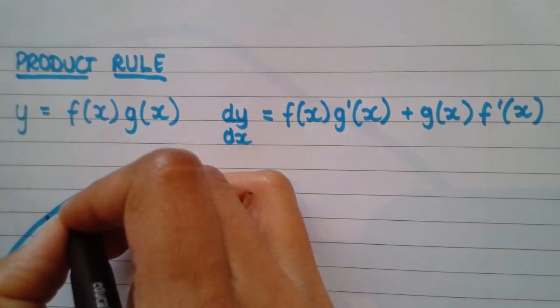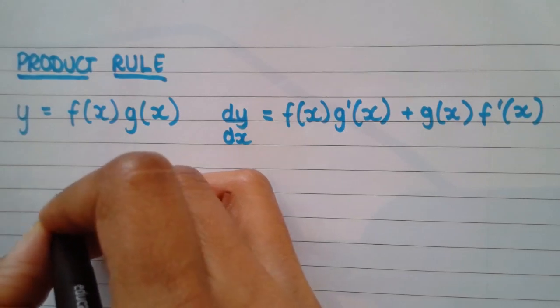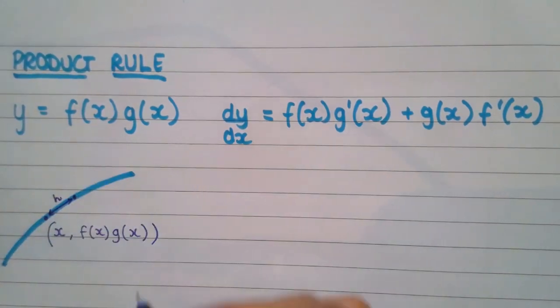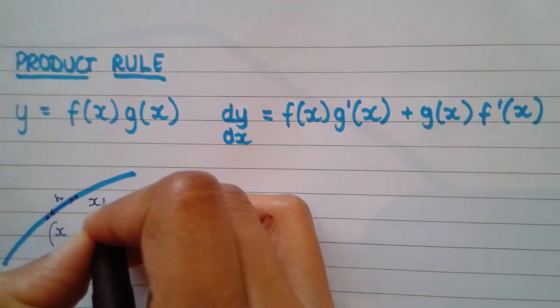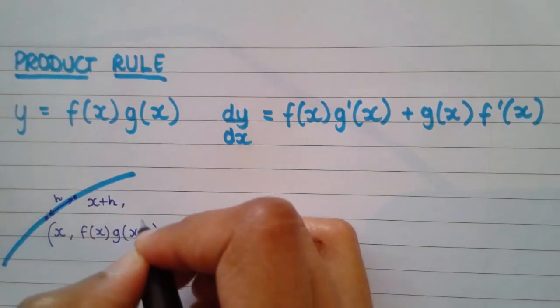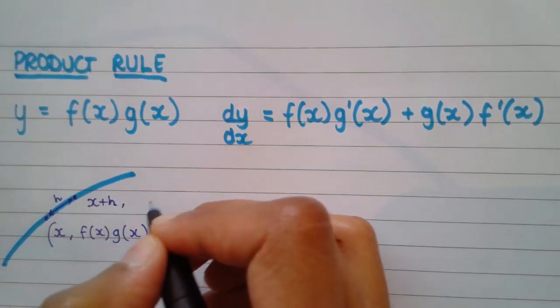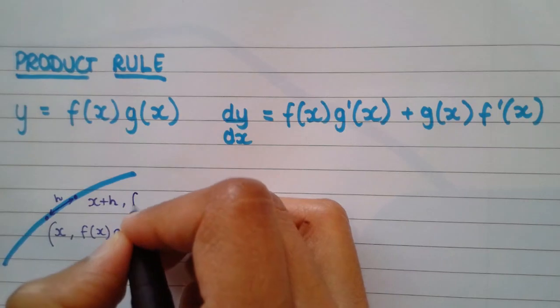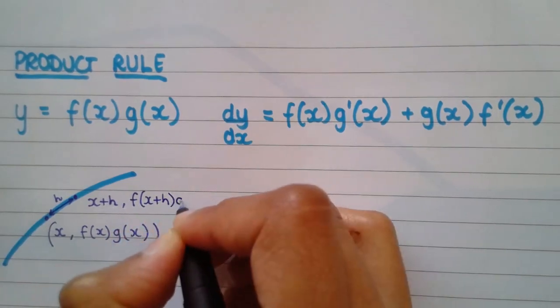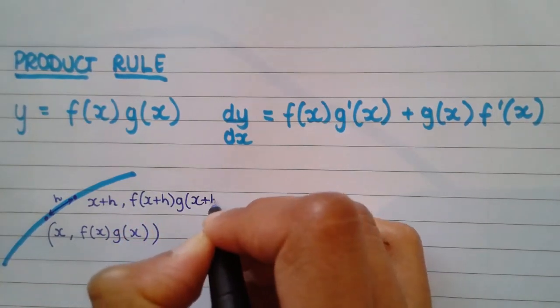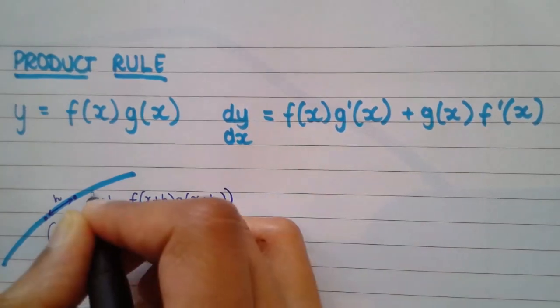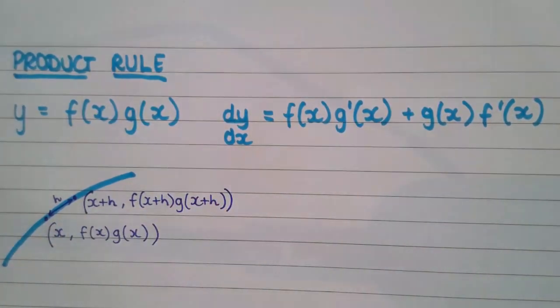The second coordinate I'll pick is gap of h away, which means that coordinate is x plus h, which means it will impact the y coordinates, making them f of x plus h times by g of x plus h. Very important to just get your basic understanding first of these coordinates and then putting them in practice.